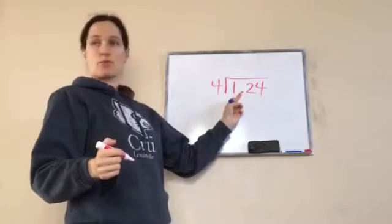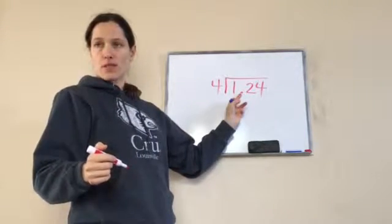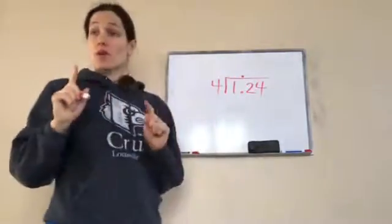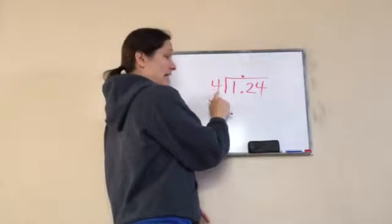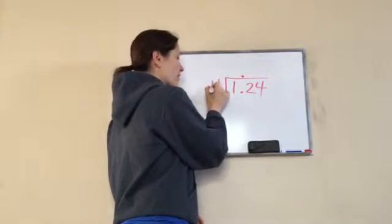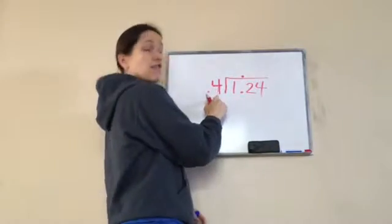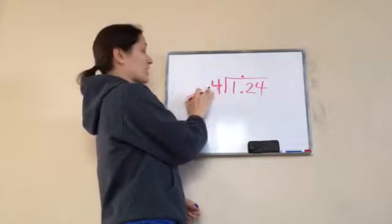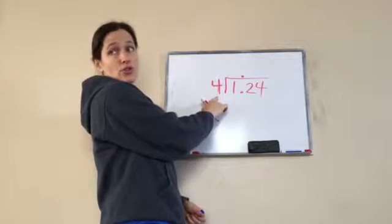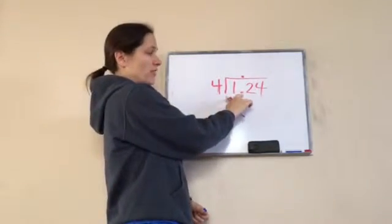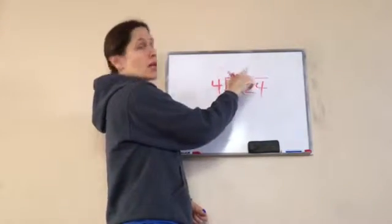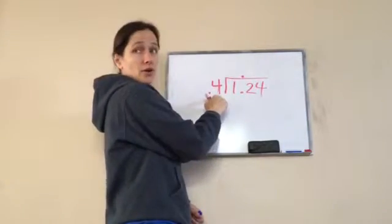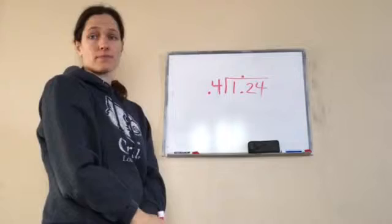In the dividend, if we have a decimal, what do I do with it? Bring it up, bring it up. Now, when you have a decimal with the divisor, everything changes. If it's a whole number as a divisor and there's a decimal in here, you just bring it up. But if there's a decimal in here and there's a decimal here, we have to remember to do something.